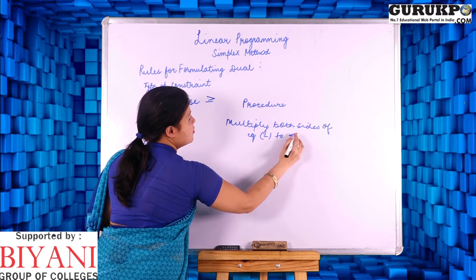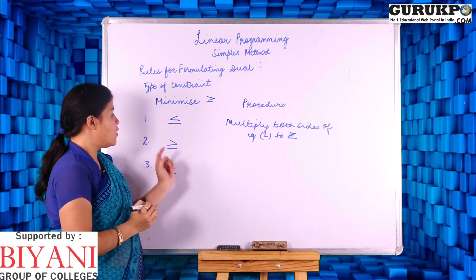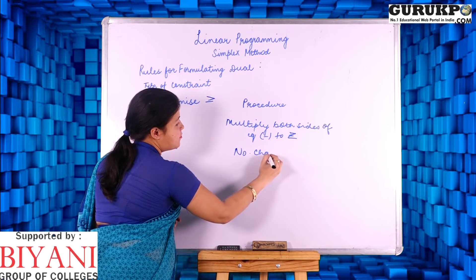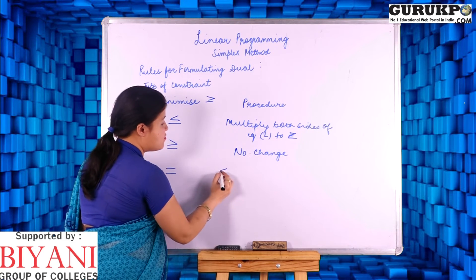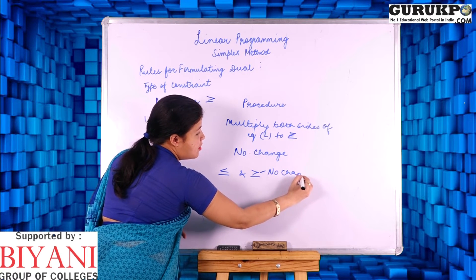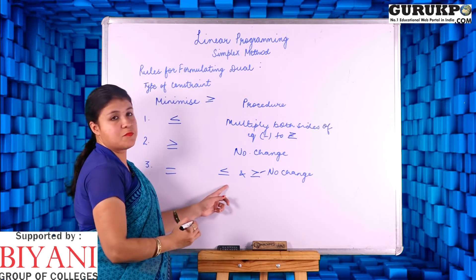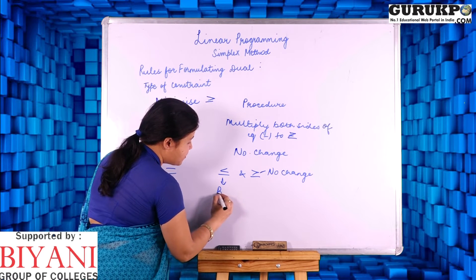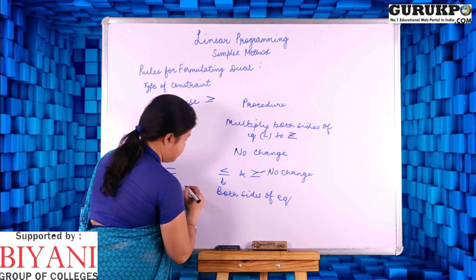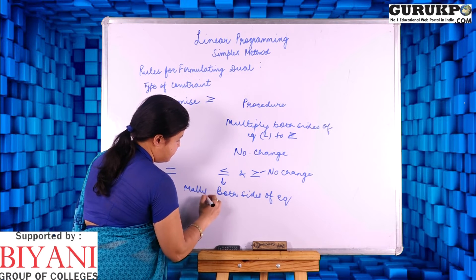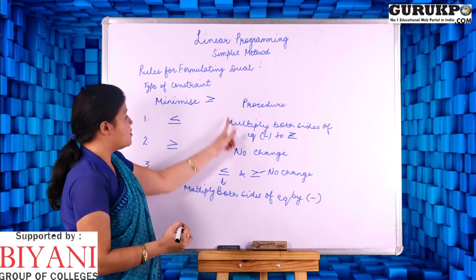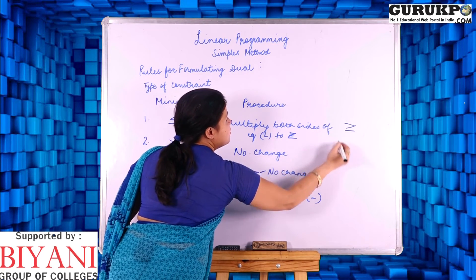To change it to the at-least sign. If it is already in the at-least sign, there is no change. And equal comprises of both the signs, so there is no need of any change. For changing the at-most sign to at-least, we are again going to multiply both sides of the equation with a negative sign. Now again the three equations change to the at-least sign.